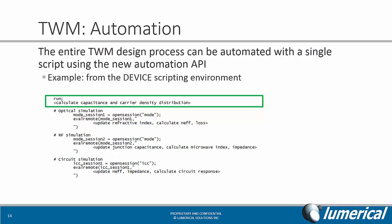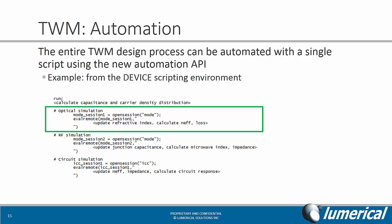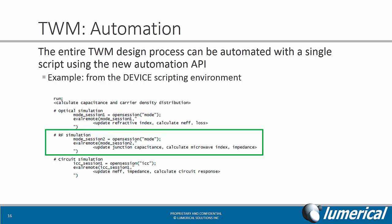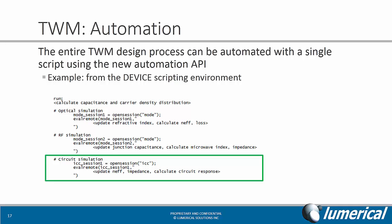The nice thing about the new automation API is that you can automate the entire design process with a single script. For example, from the Device scripting environment, you can run charge transport simulations, perform the small signal AC analysis, then launch a MODE Solutions session for the optical mode analysis, followed by another MODE Solutions session to carry out the RF transmission line analysis. Finally, you can take the results from all the component level simulations and update the compact model in Interconnect so that you can see how the circuit behavior of the modulator is affected by any changes you make to the component.